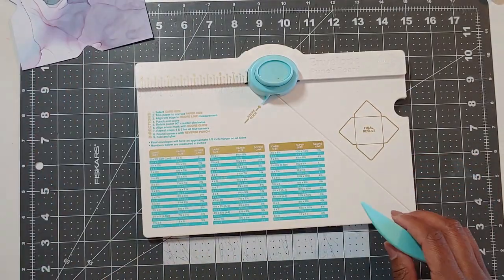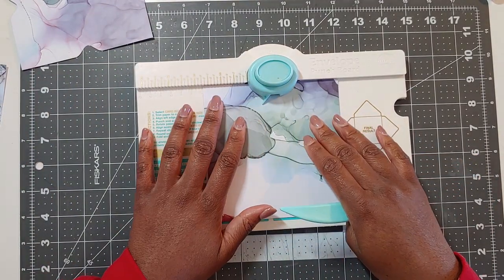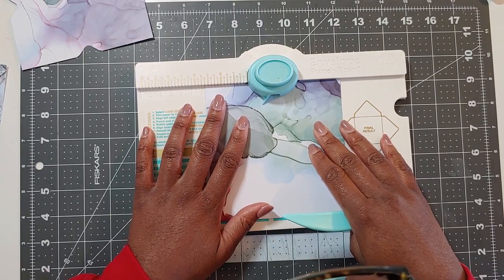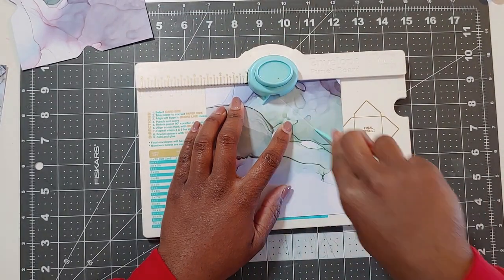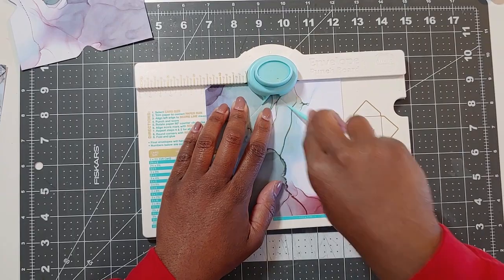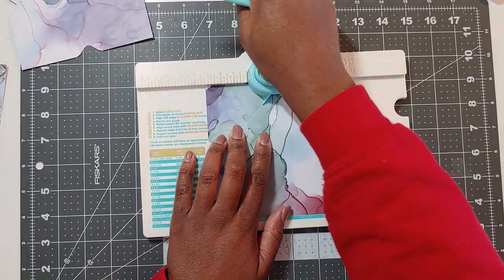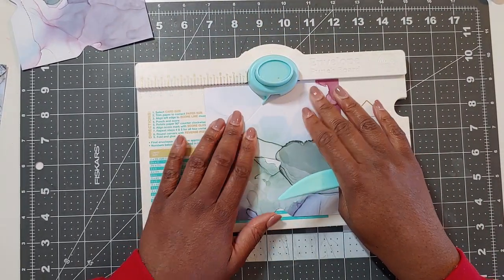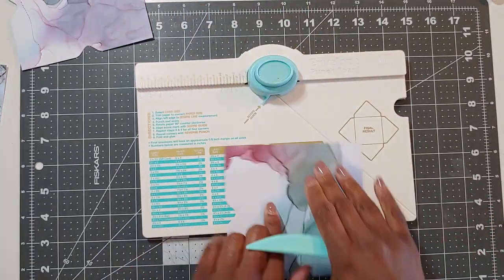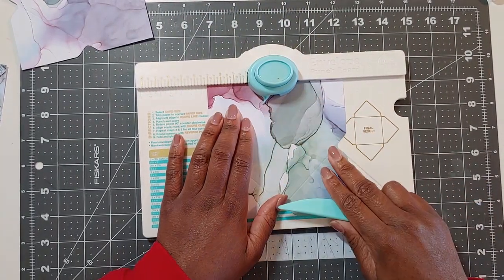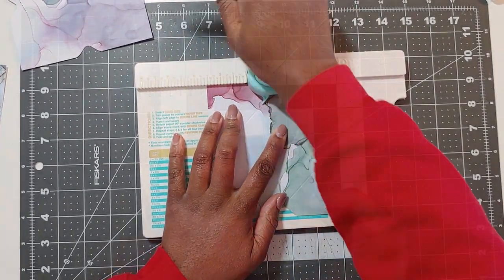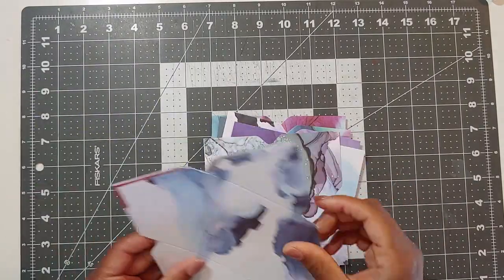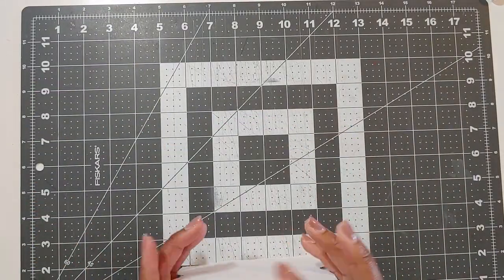So I'll do that one more time. I will take my piece of paper, line it up at two and five eighths, punch and score. Now I'll line that score up with a little blue thingy and score and punch again, line the score mark up, score again and punch and rinse and repeat. I am going to do that to all eight pieces of paper and that's what you see here.